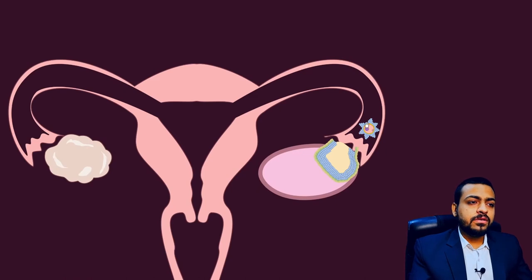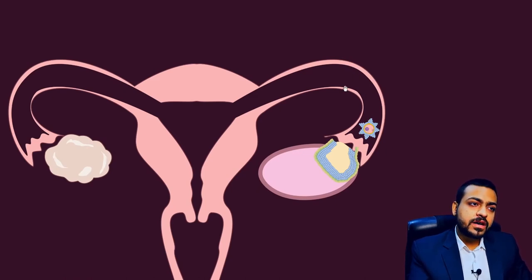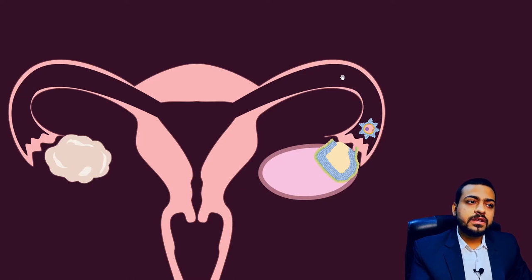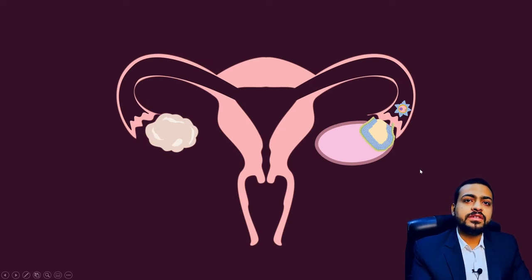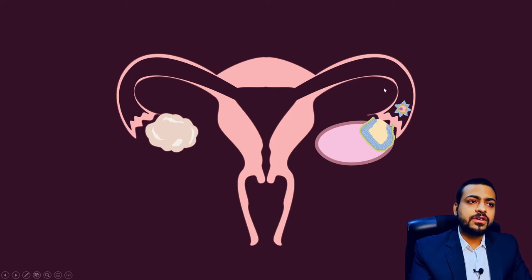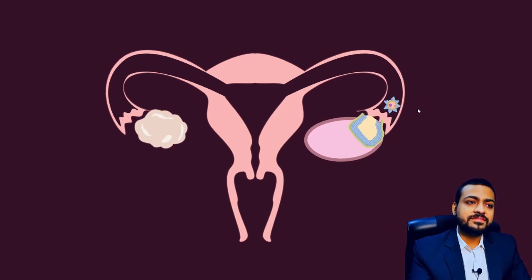Now, it has to travel from this infundibulum into the part of the uterine tube called the ampulla. This dilated part, the ampulla, is the most common site of fertilization. So it has to come here in order to get fertilized with the sperm.